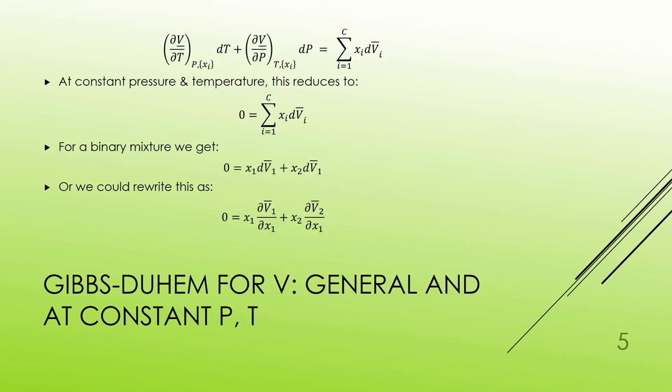I could look at this for volume. So, DV/DT at constant pressure DT, plus DV/DP at constant temperature DP, is going to be the sum of the mole fractions times the partial molar volumes for each species. And at constant pressure and temperature, the mole fractions times the change in partial molar volumes for each species will add up to be zero.